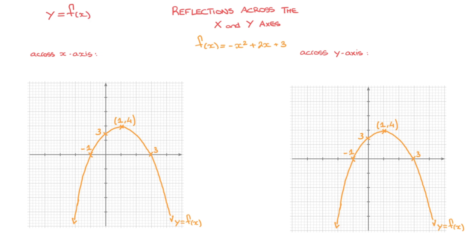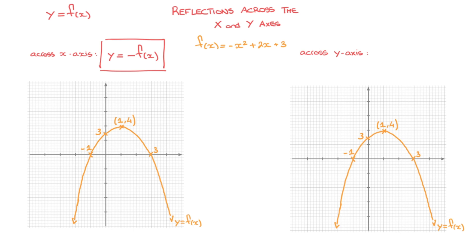To reflect a curve across the x-axis, we transform it as follows: y equals negative f of x, or simply y equals the opposite of f of x. Looking at this transformation, we can tell that it's a vertical transformation and will therefore be affecting the y-coordinates of this curve. The reason for that is that the change being made to f of x takes place on the outside of the function.